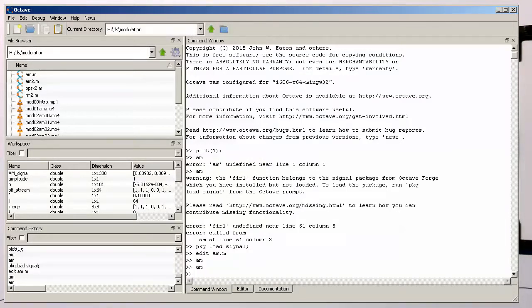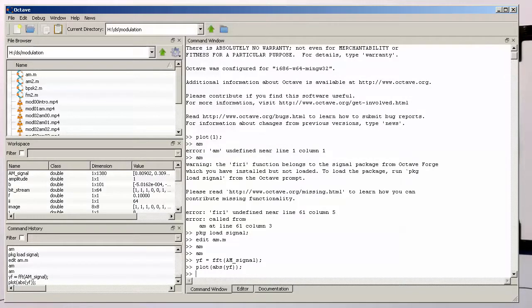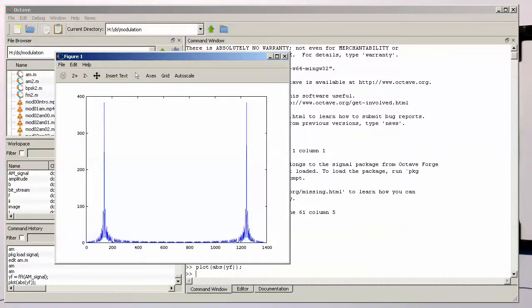And I just typed in here in the command window just now. So what we need to do is we need to do the Fourier transform of this, FFT of AM signal, and then we are plotting the absolute value of this. So let's have a look how our AM signal looks like.